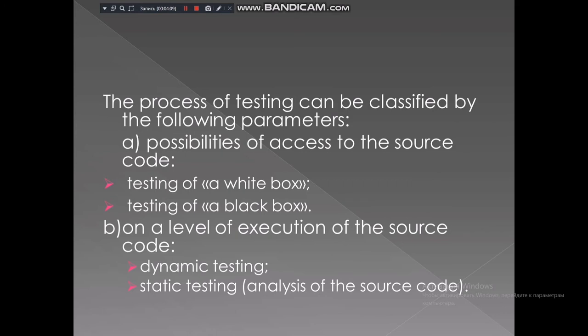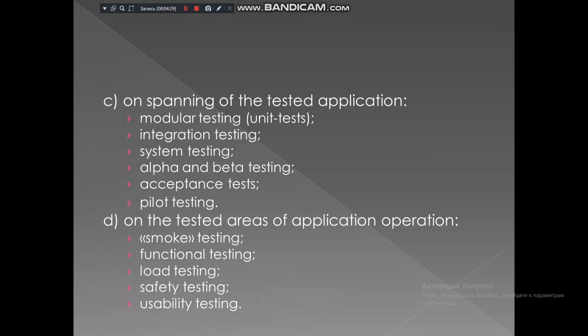Technologies and the process of testing can be classified by the following parameters: possibilities of access to the source code — testing of white box, testing of black box; on a level of the resource code — dynamic testing and static testing; on spanning of the tested application — modular testing, integration testing, system testing; and on the tested areas of application operations — smoke testing, functional testing, load testing, safety testing, and usability testing.